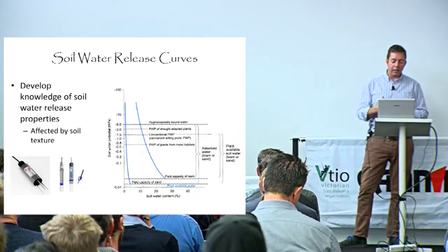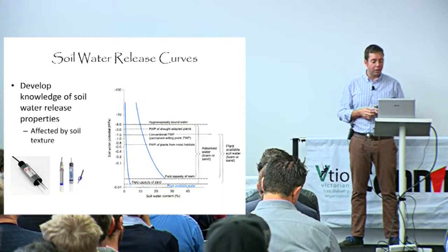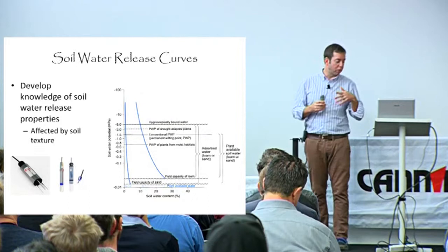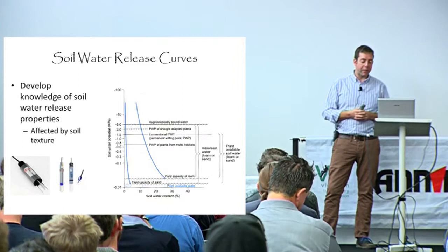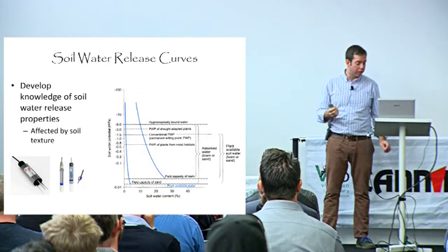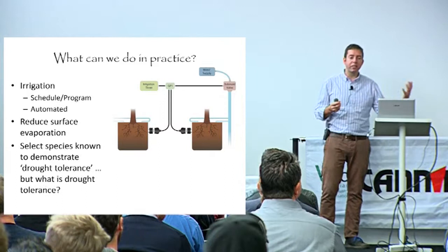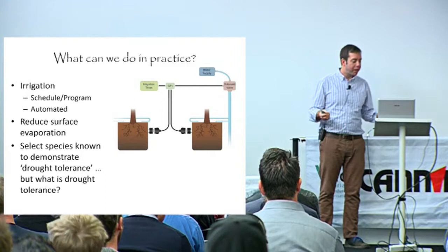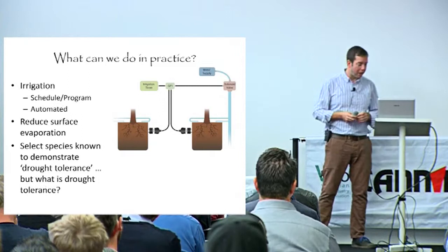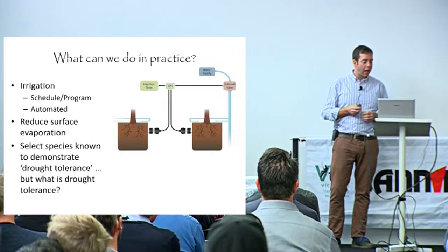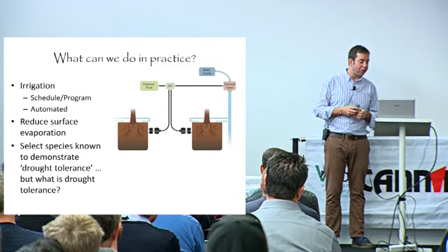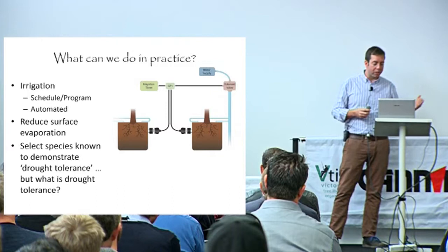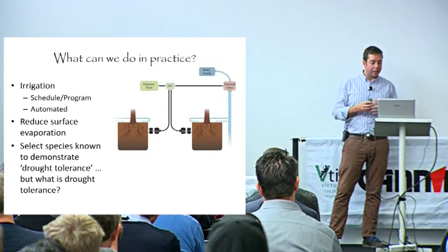You can assess these things using tensiometers and heat-of-probes, which help you put together soil water characteristics and soil release characteristics within the rooting zone - absolutely critical for understanding at what point water becomes unavailable to the tree. In practice, we can irrigate - scheduled simply or automated. I spent a lot of time setting up watermatic irrigation systems for my PhD, scheduling irrigation based on water moisture sensors: if water was above a certain threshold it wouldn't irrigate, if it dropped below it did.